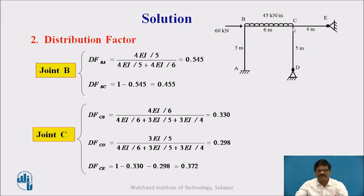For joint C, we have three members: CB is 0.330, CD is 0.298, and CE is 0.372. As per our usual notations, these are the distribution factors at joint C.